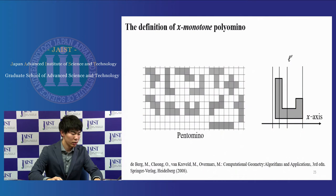This is the definition of X-monotone polyomino. For a line L, a polygon P say to be L-monotone, if the intersection polygon P and the line L' is connected. For example, a line segment, a point, or empty for any line L' perpendicular to line L. If the line L can be the X-axis, we call it X-monotone. For example, all pentomino is X-monotone.